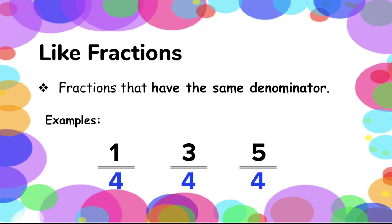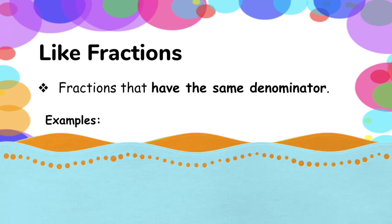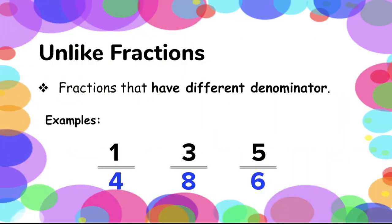Let's now have a closer look at unlike fractions. These are the total opposite of like fractions — fractions that have a different denominator, regardless if it is a proper or improper fraction. As long as it shows a different denominator, it is considered unlike fractions. For example: 1 fourth, 3 over 8, and 5 over 6.